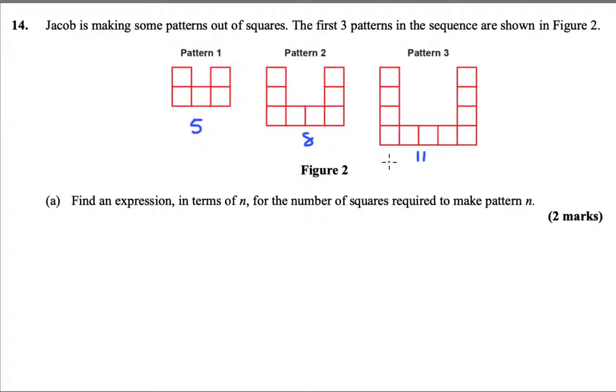So we're adding three on every time, and so we can make a rule for that sequence. The nth term is going to be 3n plus 2.